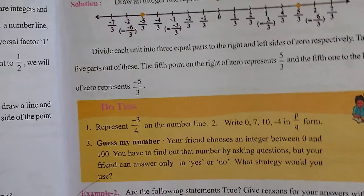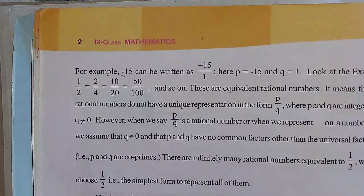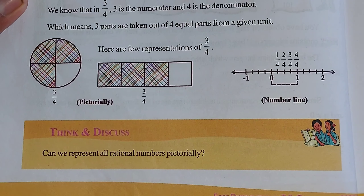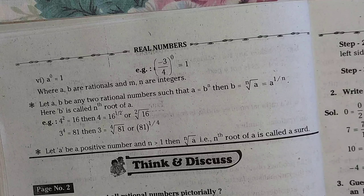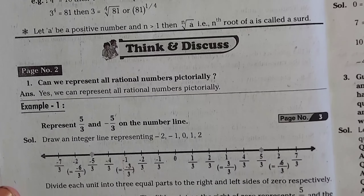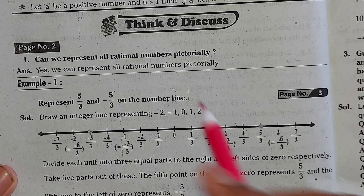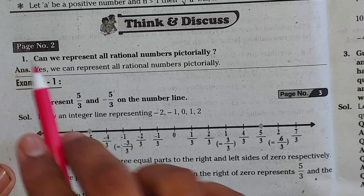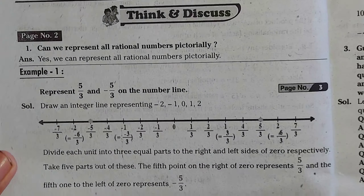In page number two you can see the first Think Discuss question. We will see Think Discuss question answer. You can see the answer is in one line. After that, page number three has a Do This section — now we will see those questions answered.